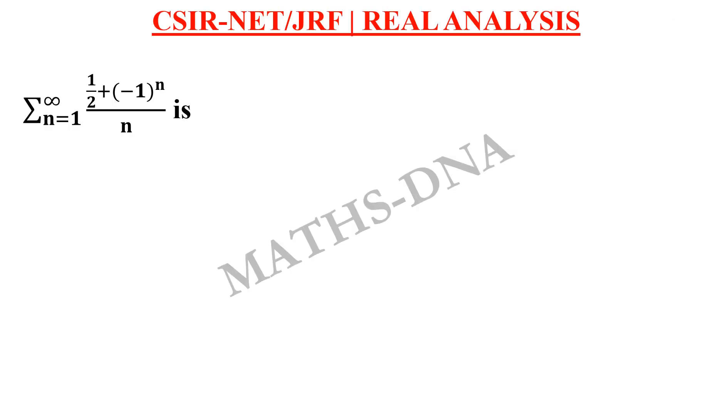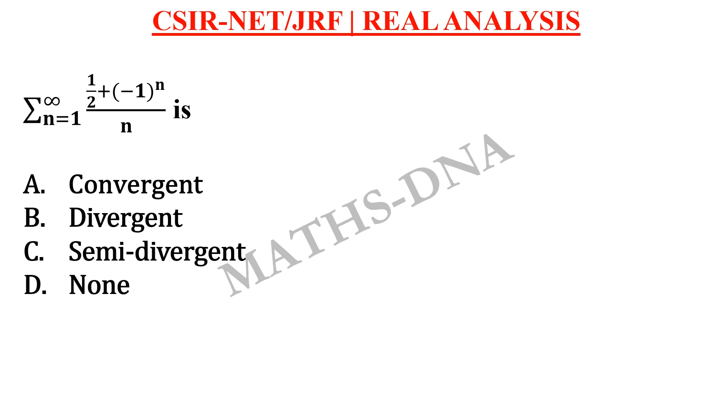Moving on to the question. The question is: series summation n running from 1 to infinity of (1/2 + (-1)^n)/n. The options are: a) convergent, b) divergent, c) semi-divergent, and d) none of them.